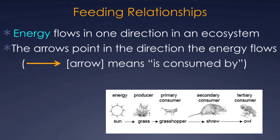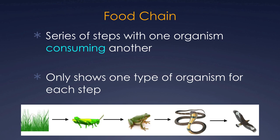There are two different ways to show feeding relationships: food chains and food webs. Food chains are quite simple — a series of steps with one organism consuming another, showing one type of organism for each step. So even though the grasshopper may eat something other than grass, we're only showing grass; even though frogs eat flies or dragonflies, we only show grasshoppers. It's one organism per step, like links in a chain.